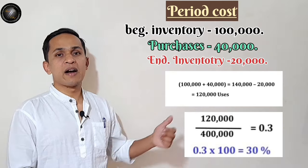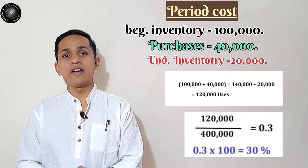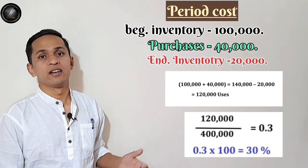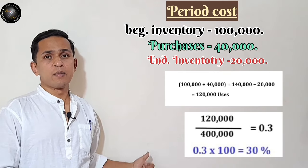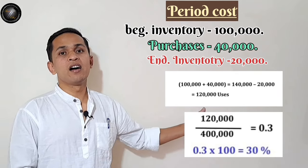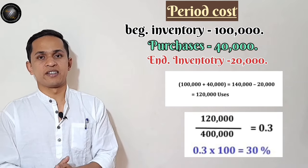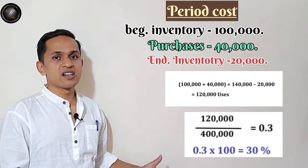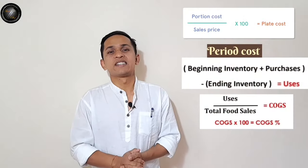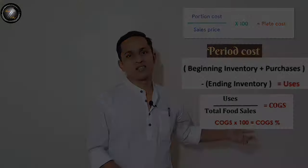1,20,000 divided by 4 lakh equals 0.3 — that is our COGS. Take the COGS and multiply by 100 to get our COGS percentage, which means our food cost percentage is 30 percent. I hope you understand how to calculate plate cost and period cost.